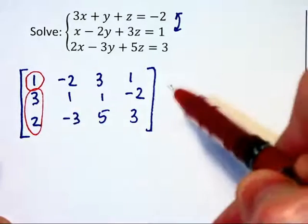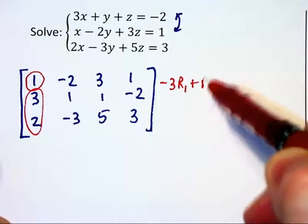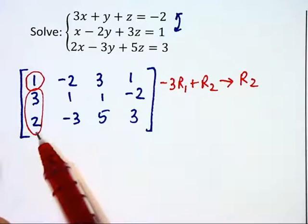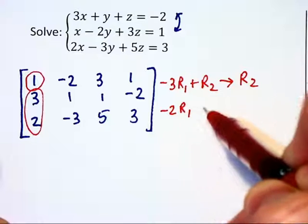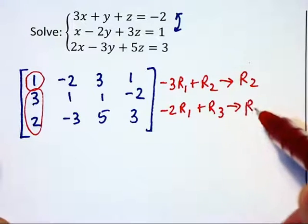So to cancel out this 3, we will say -3R₁ + R₂ → R₂. And to cancel out the 2, we will multiply that first row by -2 and then add that to row 3 to become the new row 3.